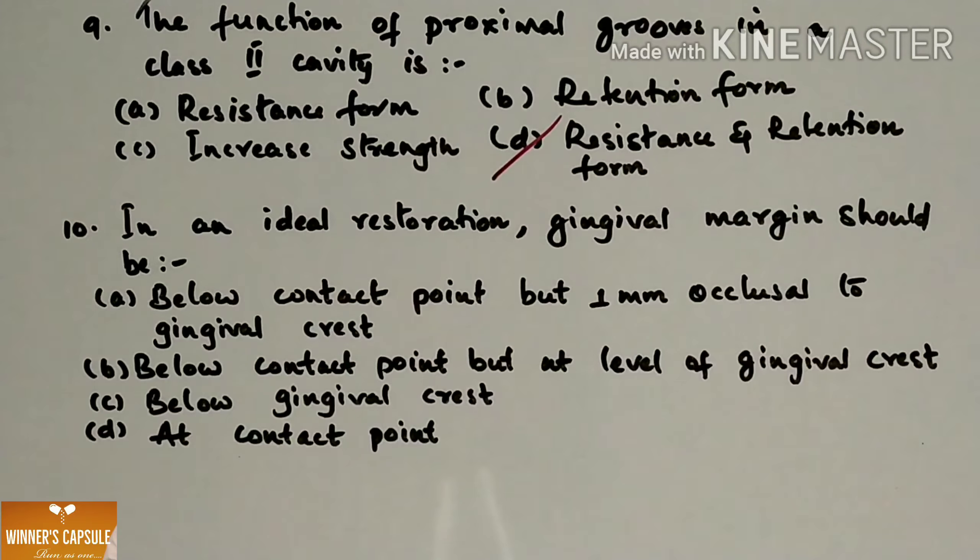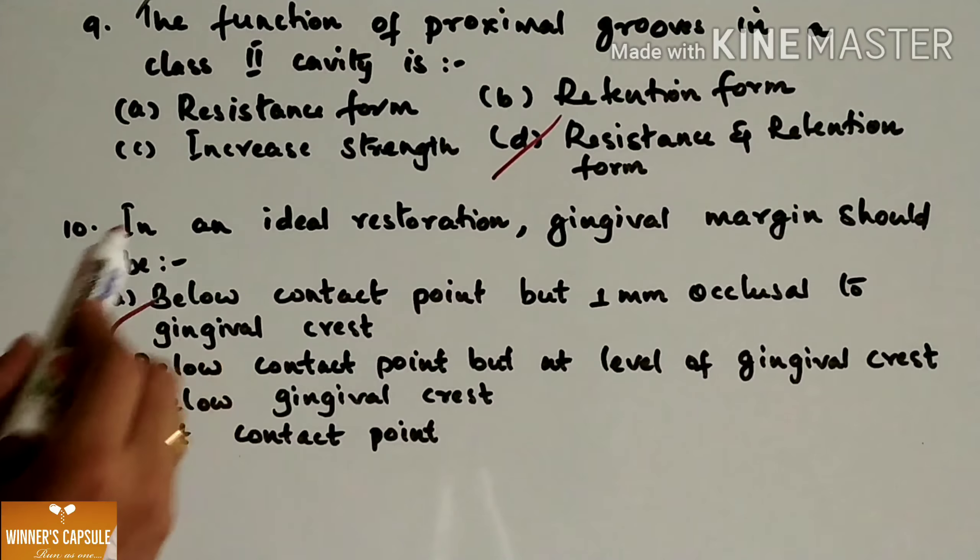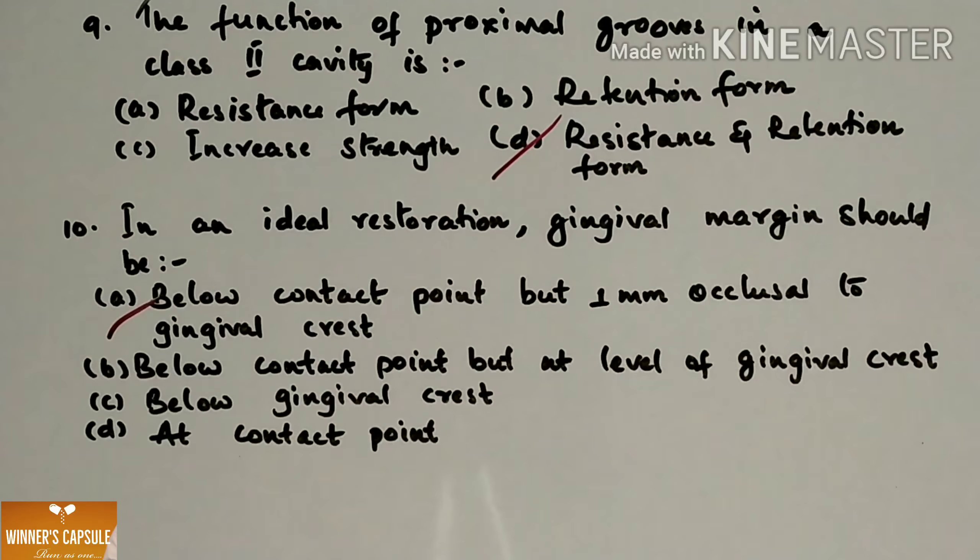Next question: In an ideal restoration, gingival margin should be (a) Below contact point but 1mm occlusal to gingival crest (b) Below contact point but at the level of gingival crest (c) Below gingival crest and (d) At the contact point. Answer is option A, below contact point but 1mm occlusal to the gingival crest.